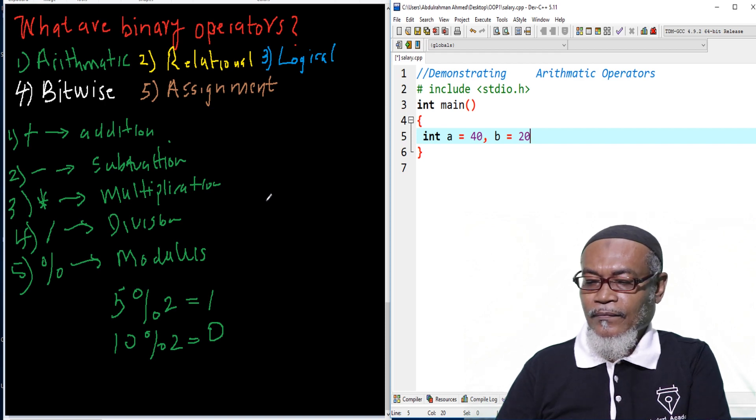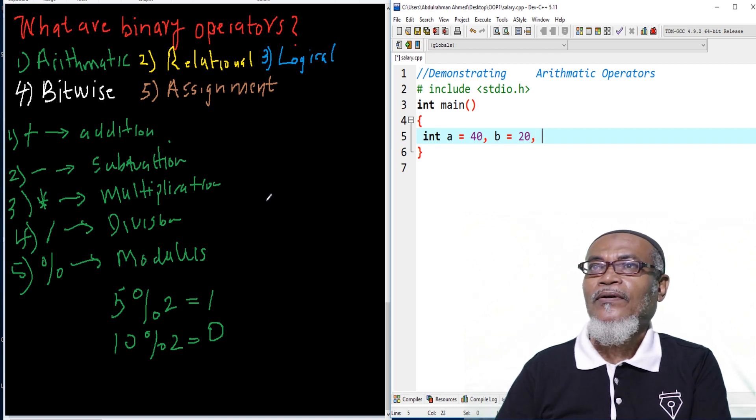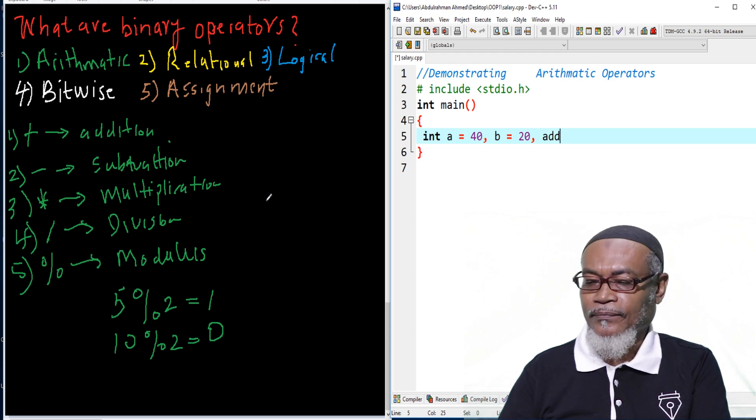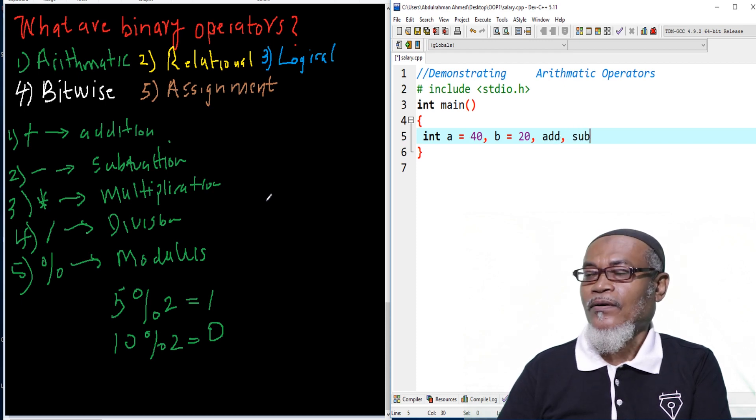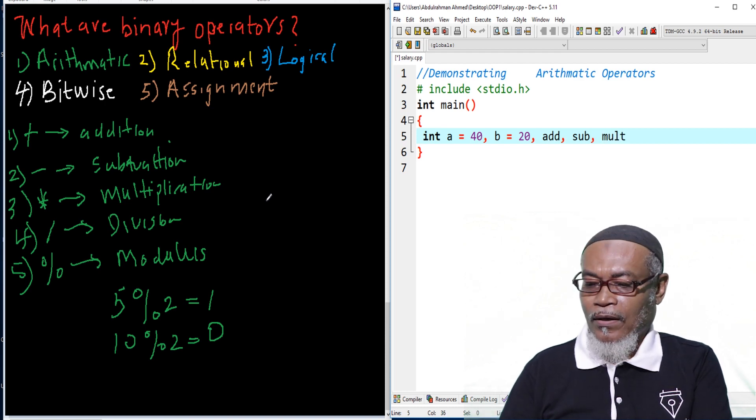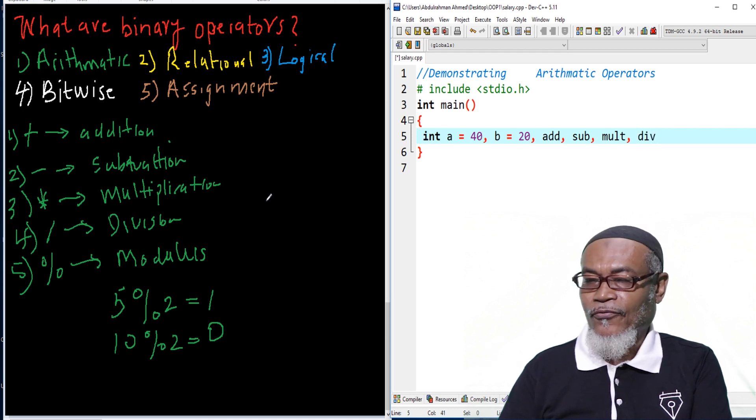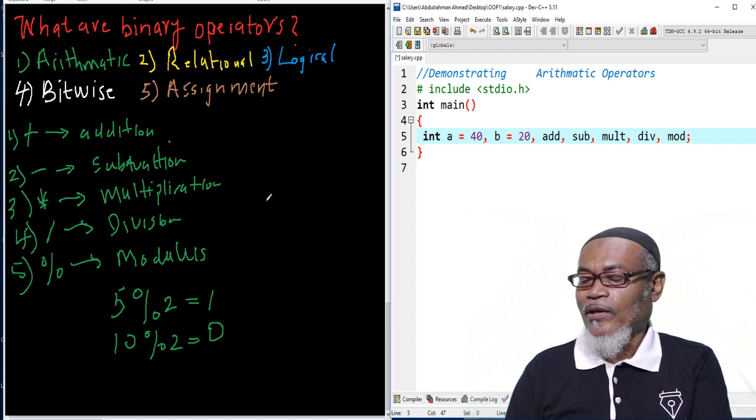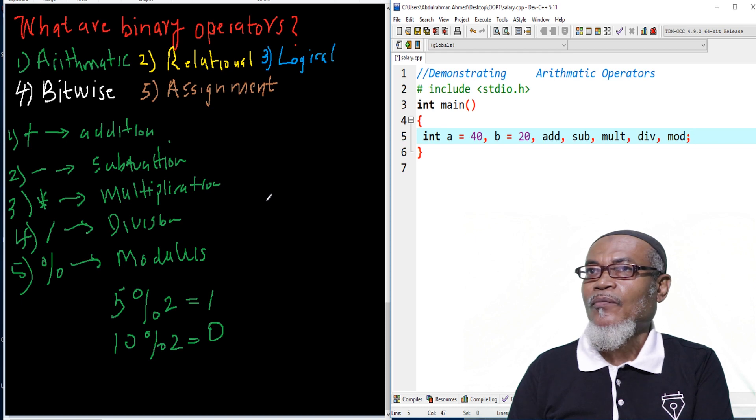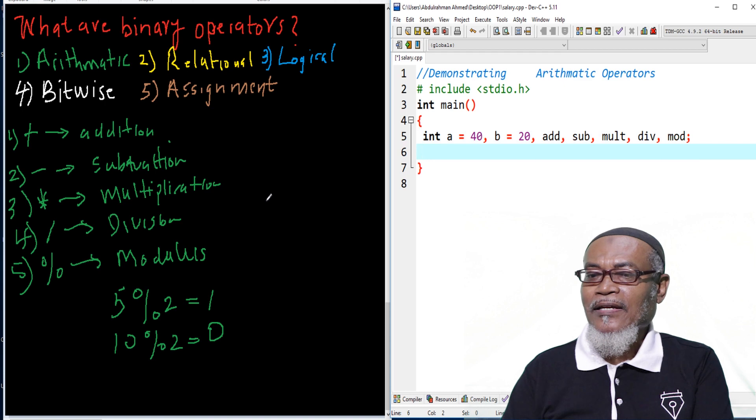And then, I'm declaring a variable called add for addition, sub for subtraction, mult for multiplication, div for division, and mod for modulus. Those are actually my variables which I'm going to use to demonstrate the arithmetic operator.